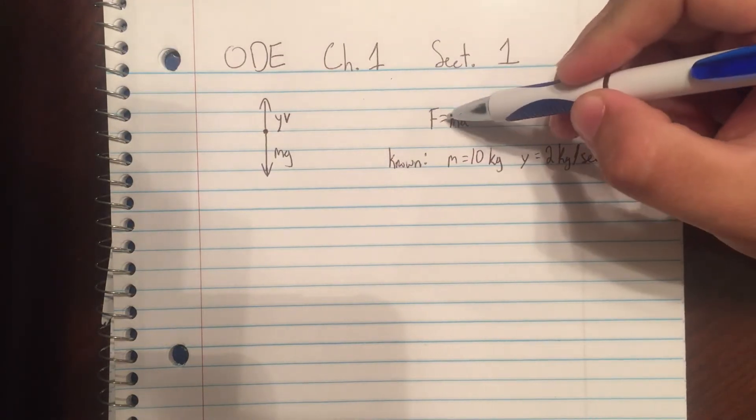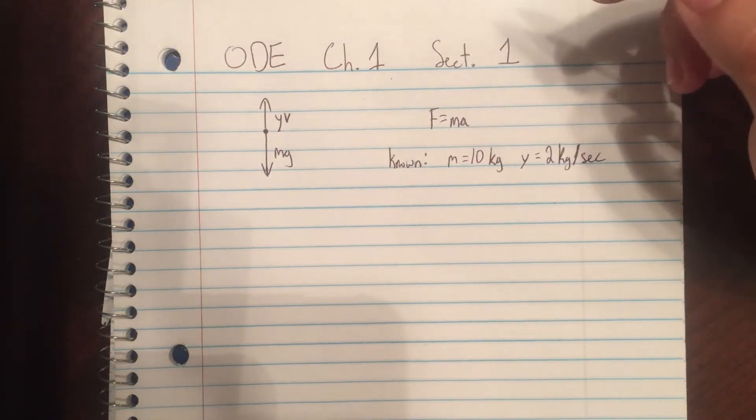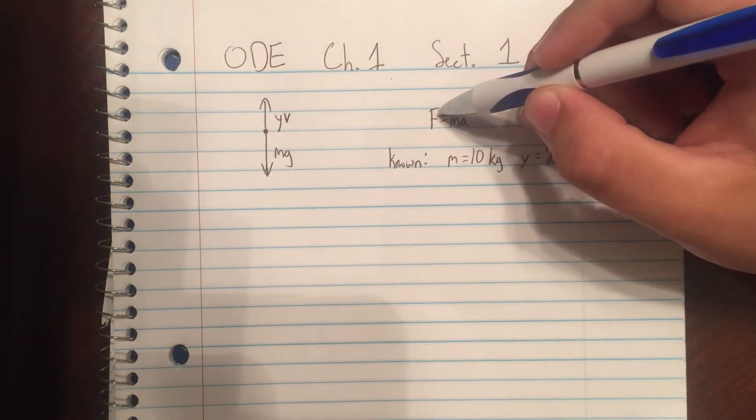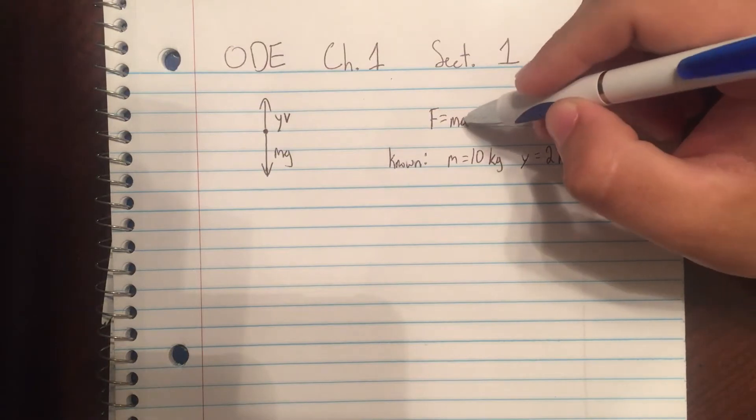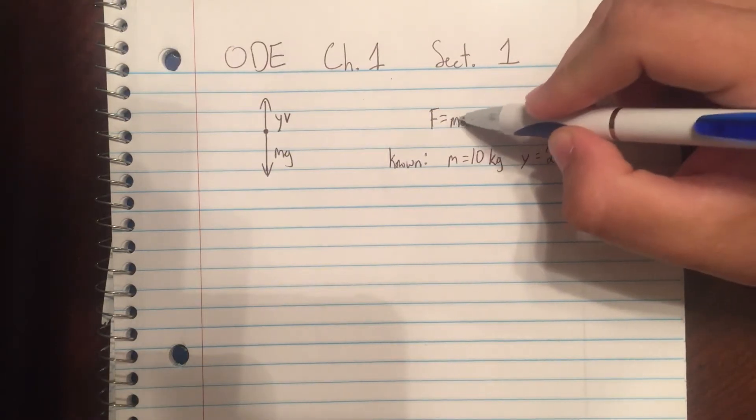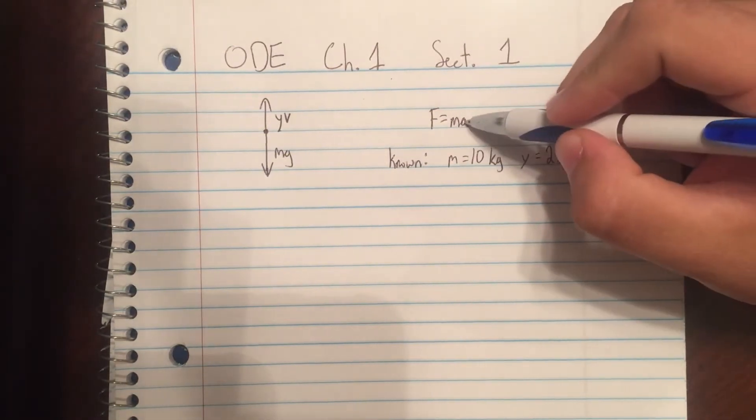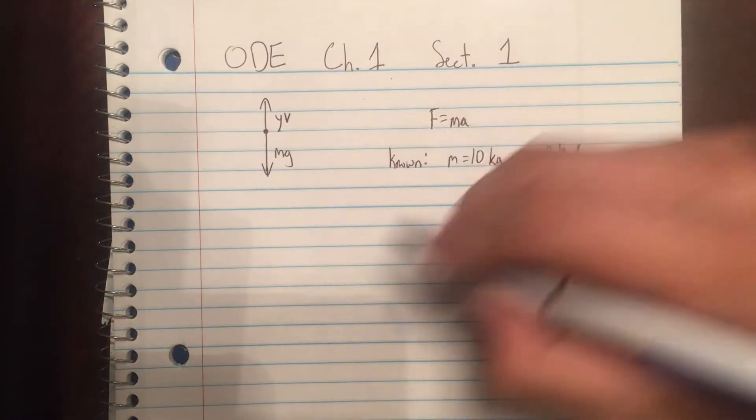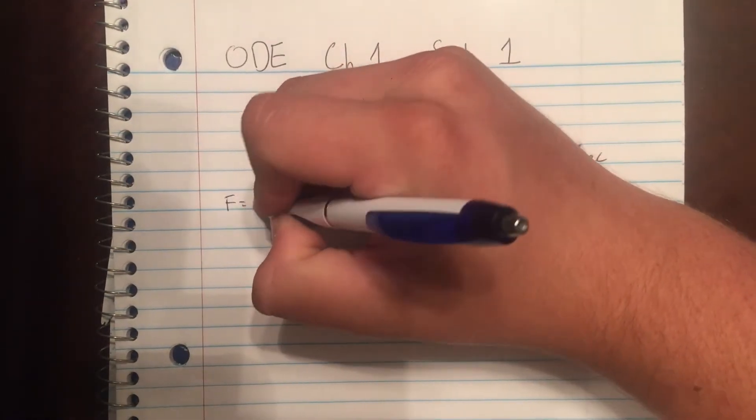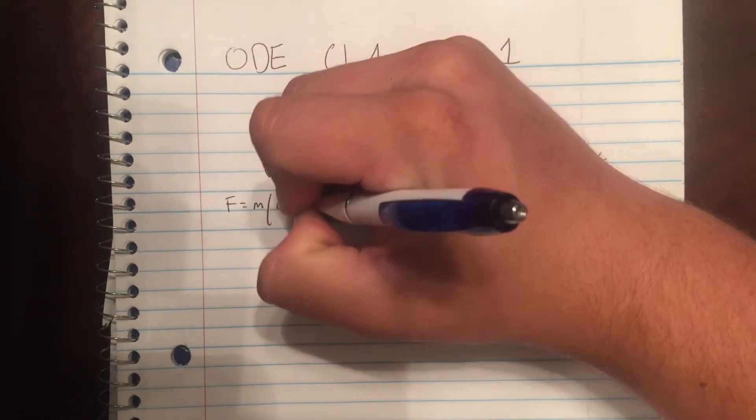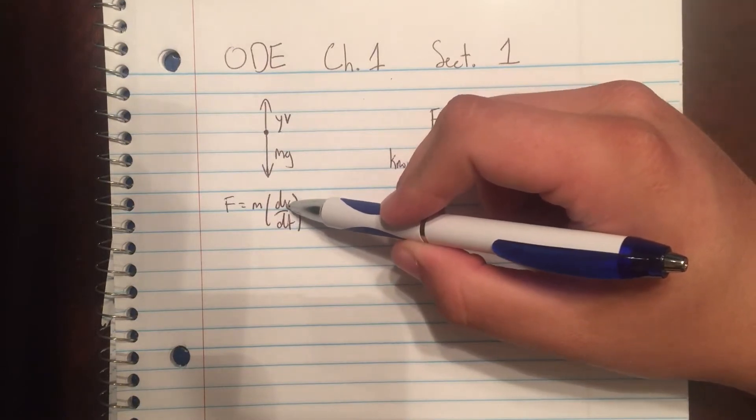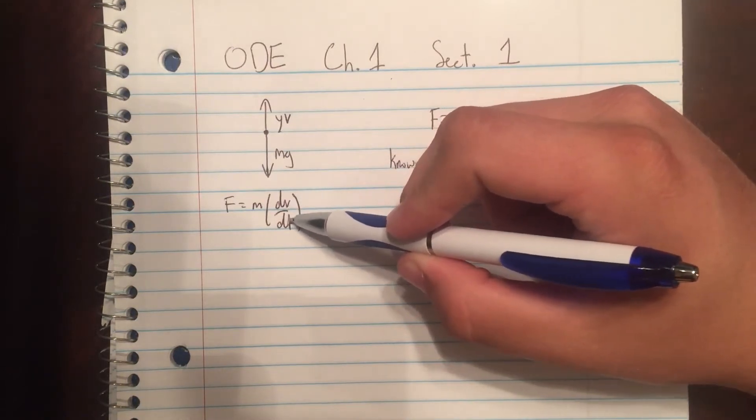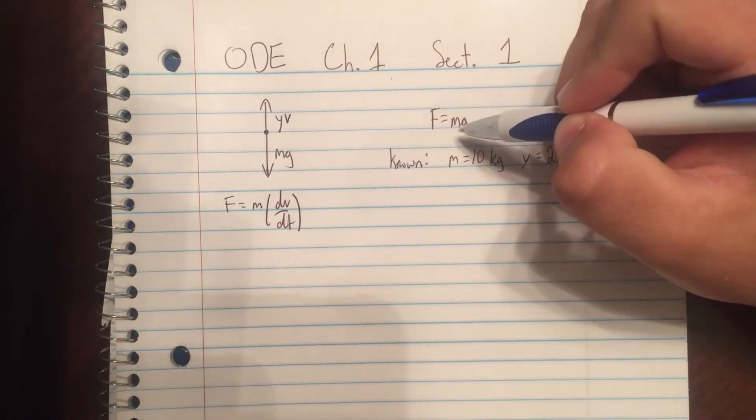We know that f equals ma, that is a given equation. We're going to derive this, so we'll leave the left side the same. We know acceleration is actually the derivative of velocity, so we can put this down: f equals m times dv dt. Remember dv dt means the derivative of velocity with respect to time, which is the same thing as acceleration.